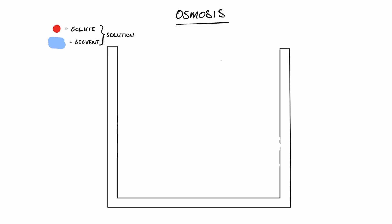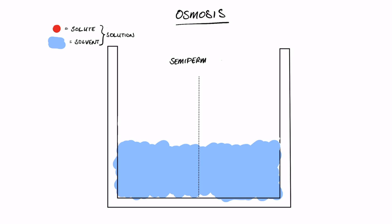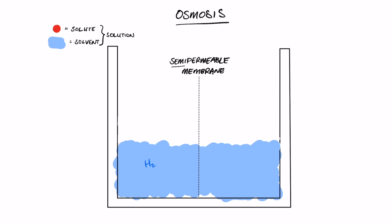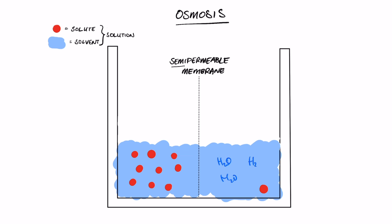Now let's talk about osmosis. I've filled the container with water again and introduced a very important component: a semi-permeable membrane. 'Semi' means partially, so not everything can move through it. Water molecules — H2O — are small enough to move across freely. However, the solute particles are much too large to fit through the gaps of the semi-permeable membrane. So we have a high concentration of solute on the left and a low concentration on the right, and the solute cannot cross.